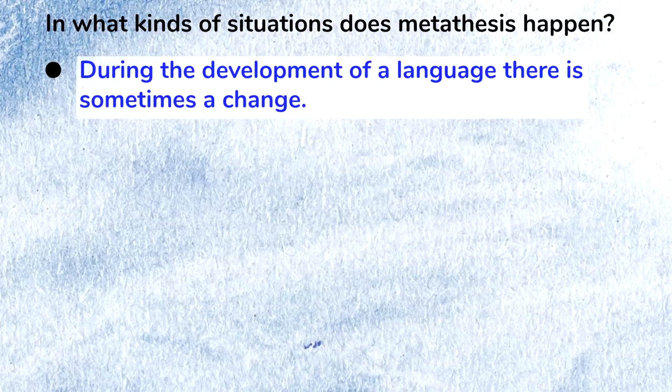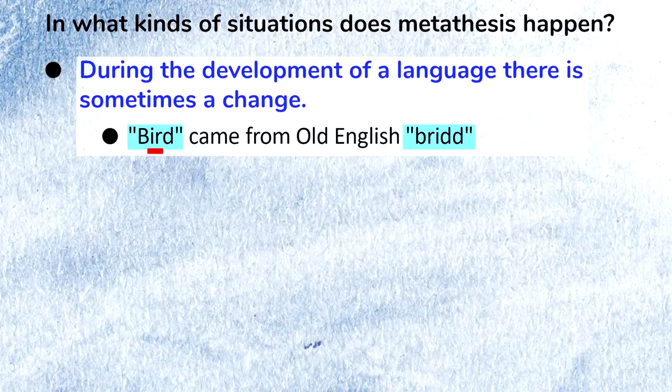In what kinds of situations does this happen? Well, during the development of a language there's sometimes a change. For example, the English word 'bird' came from Old English 'brid' — you can see that the R sound and the I sound became reversed. Also, the English word 'thrill' came from the Middle English word 'thirlen'.